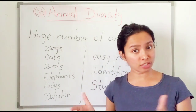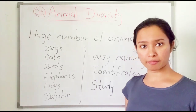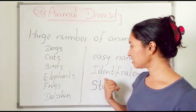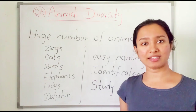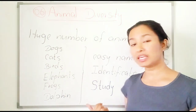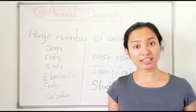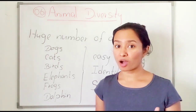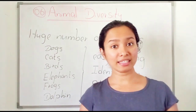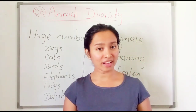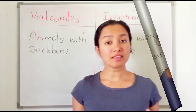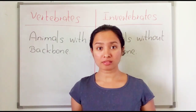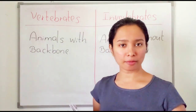In this lesson we are going to learn about these differences. It is difficult to name, identify, and study these animals because they are so different. So these animals are divided into groups, because when grouped it is easy to name, identify, and study them. Scientific classification is important in grouping animals.